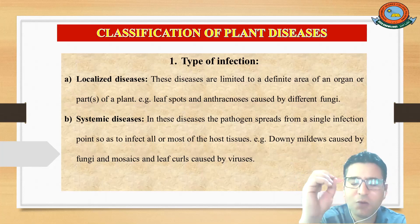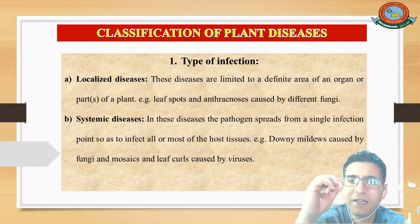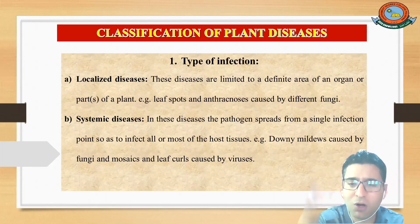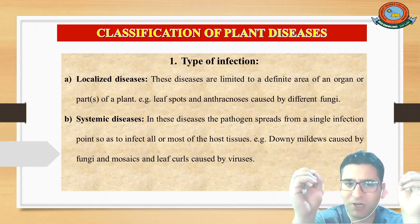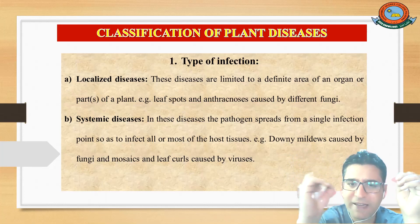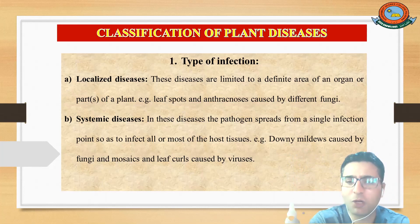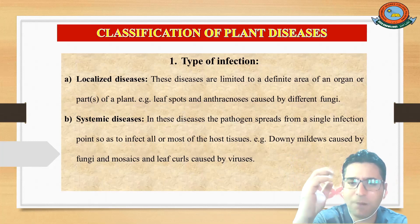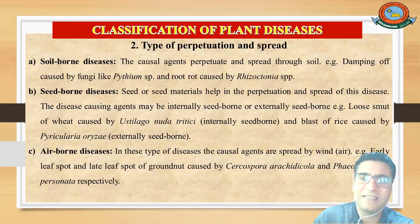To summarize, based on the type of infection we have two types of plant disease. Number one is localized plant disease — those diseases which are limited to a definite area of an organ or a part of a plant and do not spread to all of the plant body; for example, leaf spots. The second is systemic disease, where the pathogen starts from a single infection point but later infects almost all or most of the host tissues; for example, downy mildew.